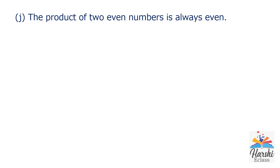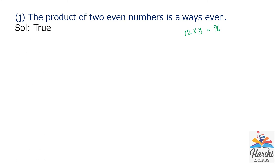Statement J: The product of two even numbers is always even. Take 12 and 8. The product of 12 and 8 is 96, which is an even number. It is a true statement.